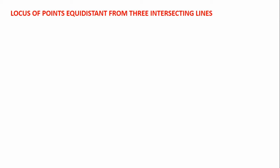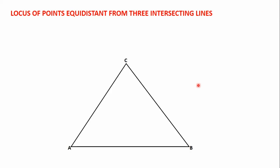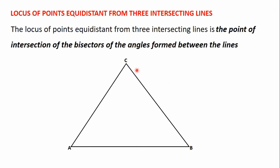Locus of points equidistant from three intersecting lines. Let's consider the triangle here. This triangle is formed by the intersection of the line AB, the line AC, and the line BC. We are going to learn how to find the locus of points equidistant from the line AB, the line AC, and the line BC.